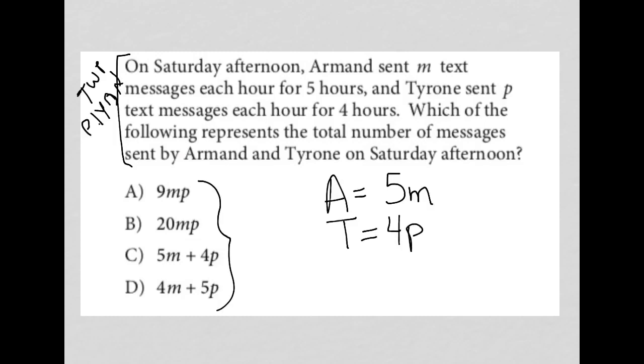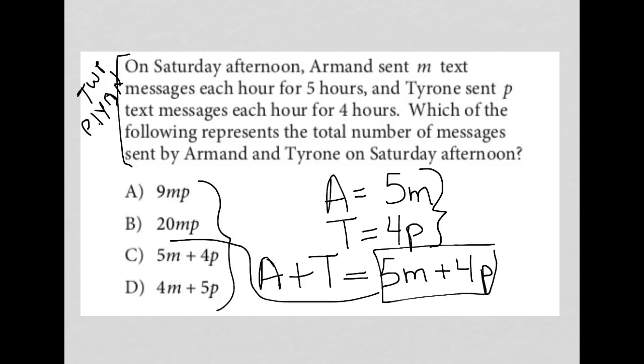Which of the following represents the total number of messages sent by Armand and Tyrone on Saturday afternoon? So what I'm looking for is A plus T, what was sent by Armand and Tyrone. So based upon my translation here, I already have that. I know that A plus T has to equal 5M plus 4P. And I see that that answer is choice C.